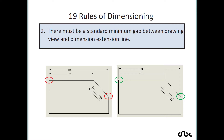Rule number 2: there must be a standard minimum gap between drawing views and the dimension extension line. There should be a visible gap here, but if you look at this view, there is no gap between the drawing view and the dimension extension line — that is a problem. Some tools handle this automatically, but where they don't, you need to be careful while placing dimensions.